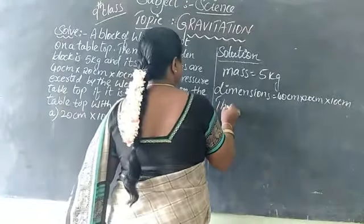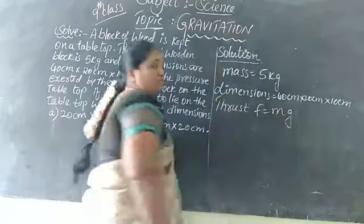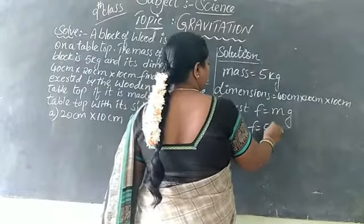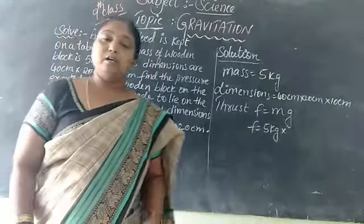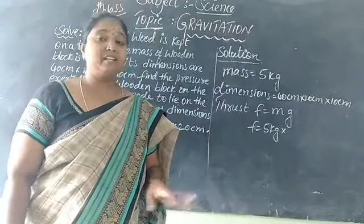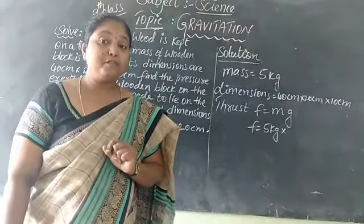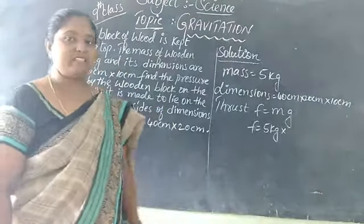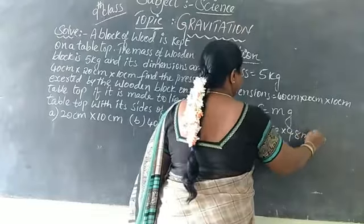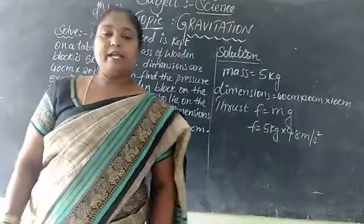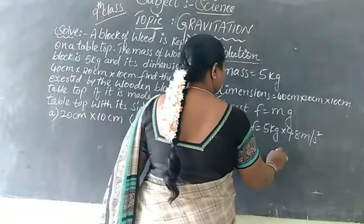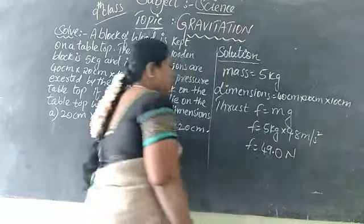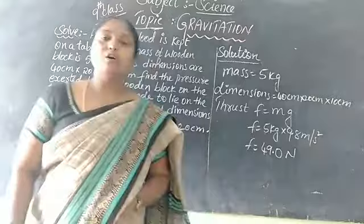Then what is the thrust? F is equal to mg. Substitute the value: F equals 5 kg into g. The value of g, acceleration due to gravity, is 9.8 meters per second squared. So 5 into 9.8 — 5 fives are 40, plus 9 gives 49. So the thrust is 49 newtons.